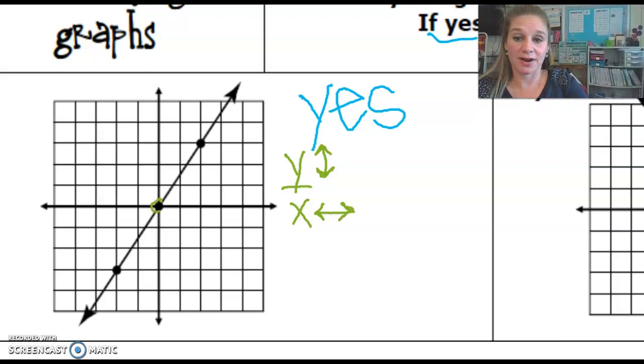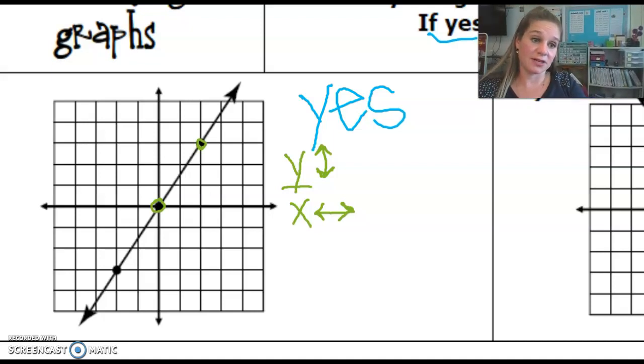If we just take two points on our graph, this point is zero zero, and then if we look at this point, it's rise three run two, so we're at three comma two. But if we want to define that constant of variation just from the graph, we could simply count.